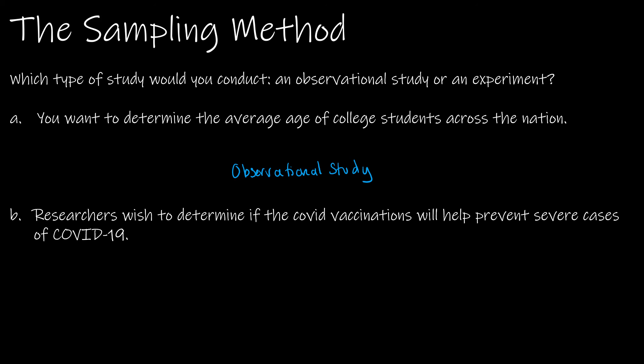Researchers wish to determine if COVID vaccinations will help prevent severe cases of COVID-19. This would be an experiment, which means we are applying a treatment — and the treatment is the COVID vaccination. We're determining cause and effect: if someone receives a COVID vaccination, will that help prevent severe cases of COVID-19? That is an experiment. Up next, we're going to look at the two types of studies separately, starting with observational studies.